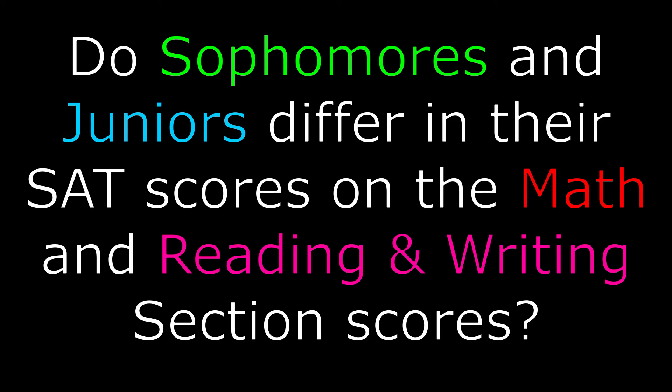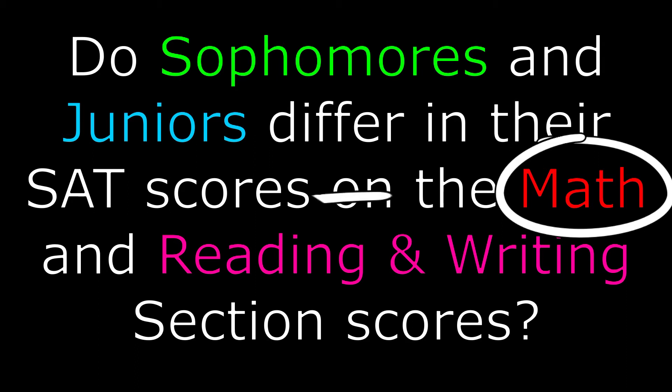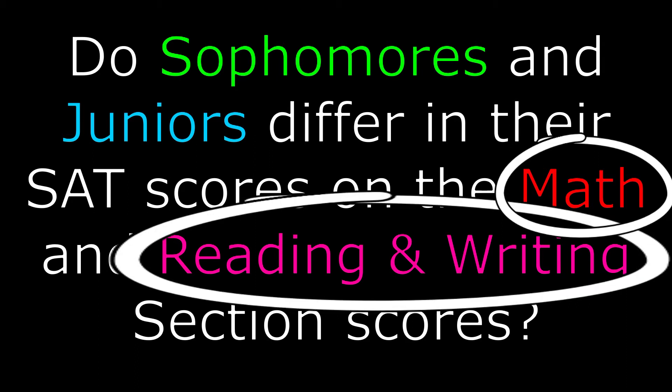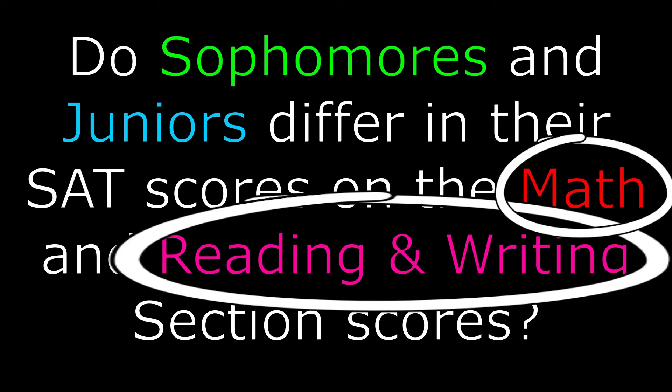Just to use an example, let's try to answer the following: do sophomores and juniors differ in their SAT scores on the math section and reading and writing section? Notice in this question there are two or more dependent variables — the math section and the reading and writing section scores. You could technically run two separate ANOVAs, but you won't be taking advantage of the unique effects that MANOVA provides when looking at the results simultaneously. MANOVA will test whether there is a difference between sophomores and juniors when considering the simultaneous scores of their math and reading and writing sections.